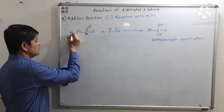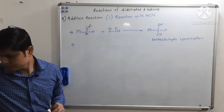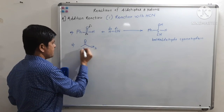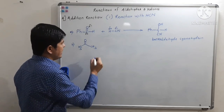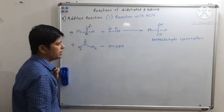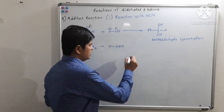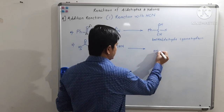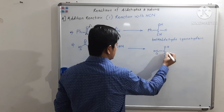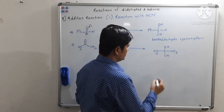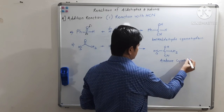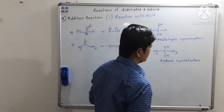Now let us see the second example. If we react acetone with hydrogen cyanide, we get acetone cyanohydrin as the addition product.